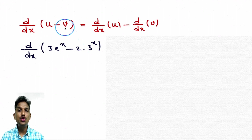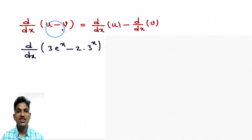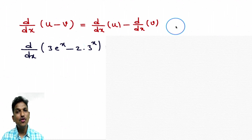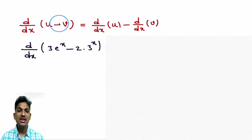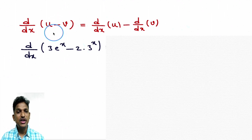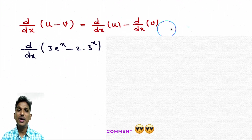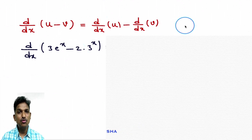Now let's see the difference rule. d/dx of (u minus v) — u is a function, v is a function. d/dx of (u minus v) is derivative of u minus derivative of v. In the sum rule, plus is there; in this rule, minus is there. So derivative of (u minus v) is derivative of u minus derivative of v.